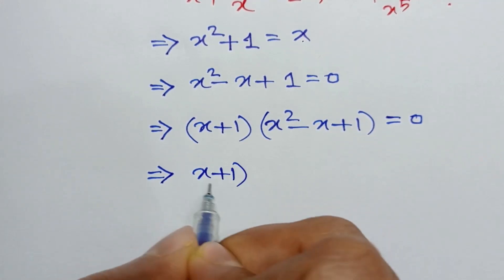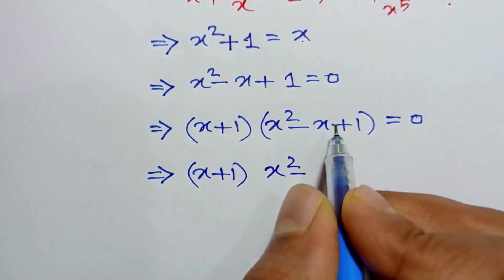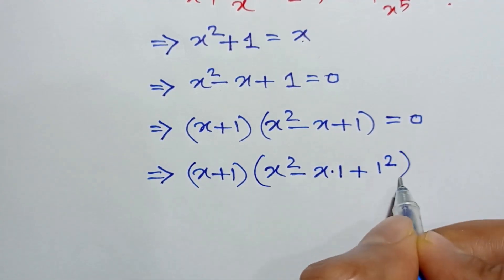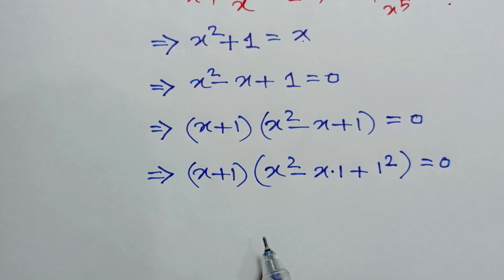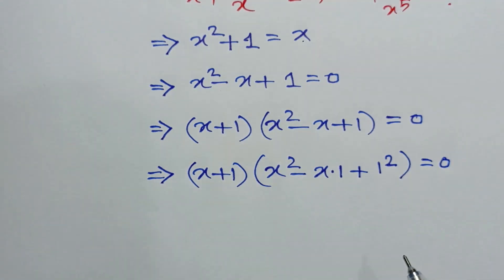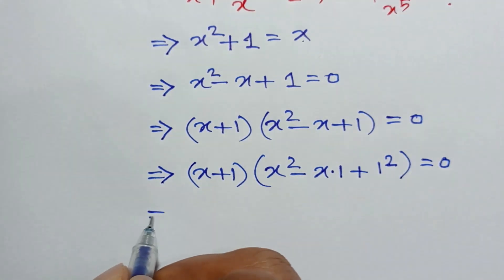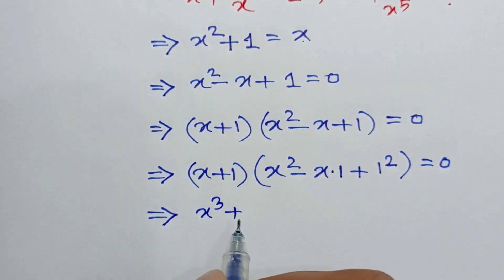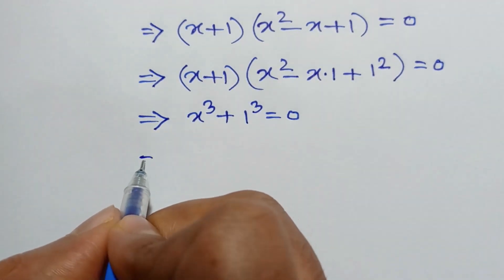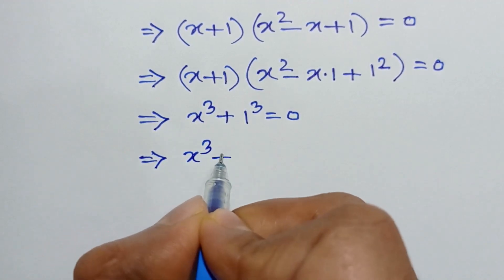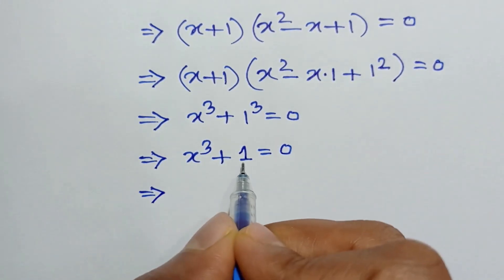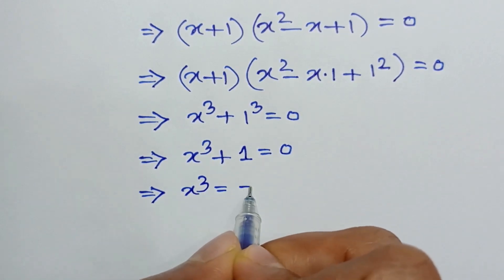Now x plus 1 times x squared minus x plus 1 can be written using the formula a plus b times a squared minus ab plus b squared equals a cubed plus b cubed. So according to this formula it can be written as x cubed plus 1 cubed equals 0. Taking 1 to the right side, we have x cubed equal to negative 1.